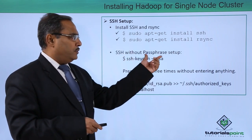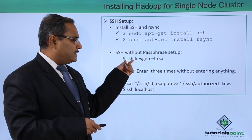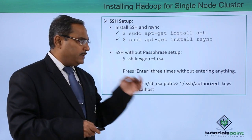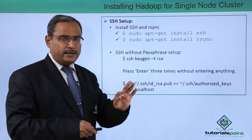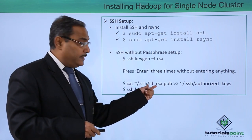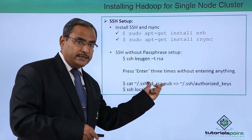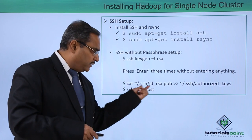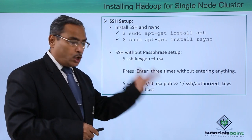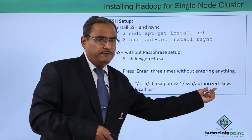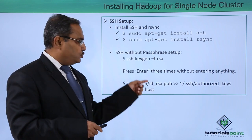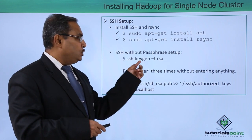Next, for SSH without passphrase setup, the command will be 'ssh-keygen -t rsa'. After that, press Enter three times without entering anything. Then run: 'cat ~/.ssh/id_rsa.pub' and redirect it to the authorized keys file in that folder. Finally, execute 'ssh localhost'. These commands are to be executed after pressing Enter three times.